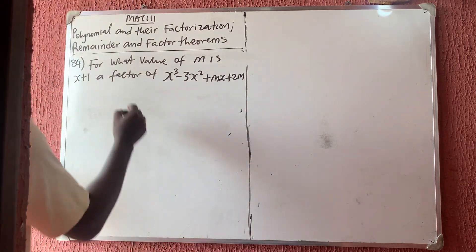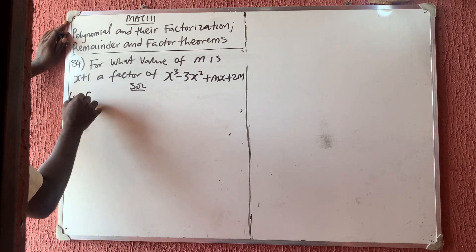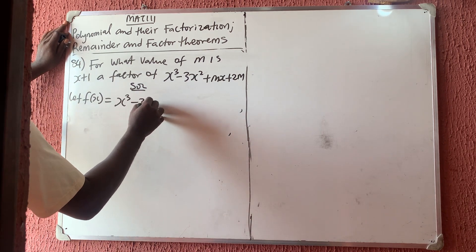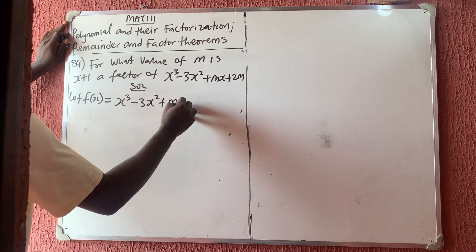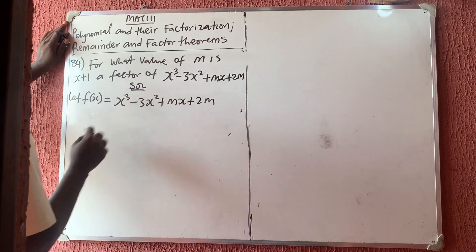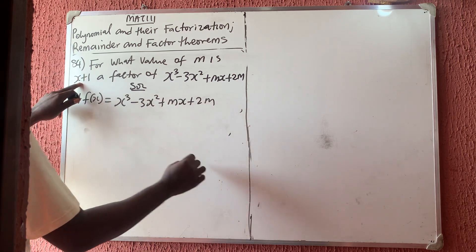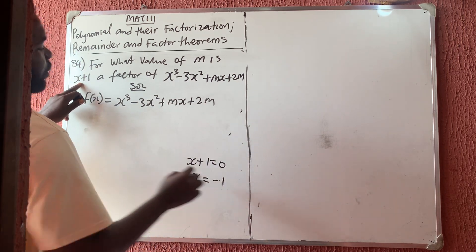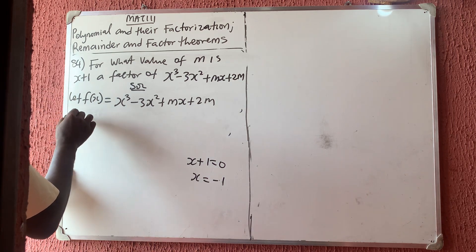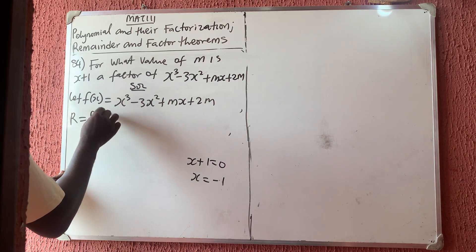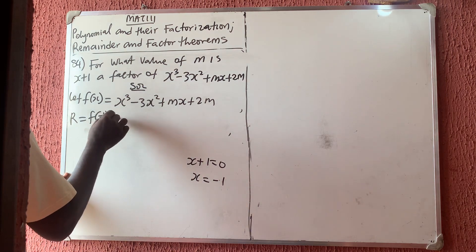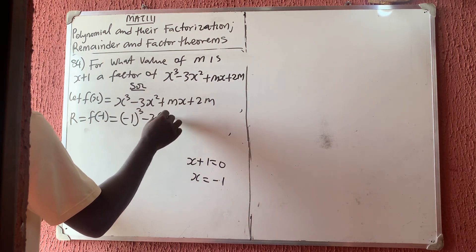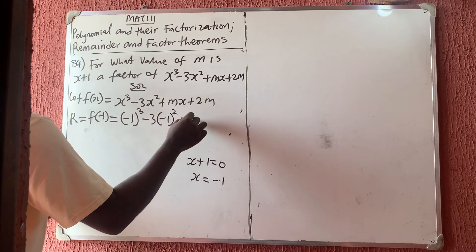The same process applies. Let f(x) be equal to x cubed minus 3x squared plus mx plus 2m. From the factor x plus 1 equals zero, we get x equals minus 1. The remainder equals f(minus 1), so we substitute x with minus 1: we have minus 1 cubed minus 3 times minus 1 squared plus m times minus 1 plus 2m.